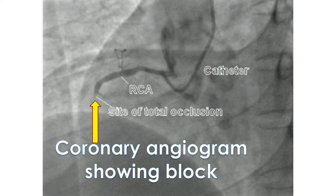Usual tests done in a case of suspected mitral regurgitation are ECG, X-ray of the chest, and echocardiogram. Echocardiogram will give an estimate of the severity of the mitral regurgitation, pumping function of the heart, and the status of other valves. When mitral regurgitation is due to a heart attack, another important test is a coronary angiogram, which is an X-ray imaging of blood vessels of the heart after injecting radiocontrast medications into them.